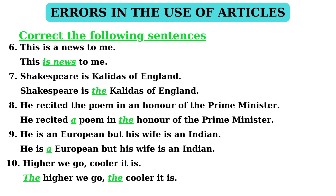In sentence 6: 'This is unused to me.' In this statement, 'a' is to be omitted because it is a common noun used in its widest sense. The correct statement is: 'This is unused to me.'